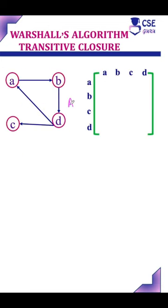For example, consider this graph and its adjacency matrix. If there is a path from a to b directly, it's represented by 1. If there is no direct path, it will be represented by 0. This is the adjacency matrix for the given graph.